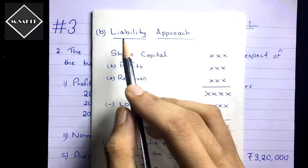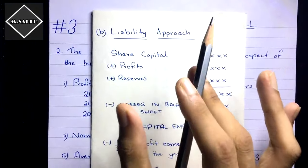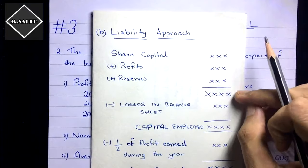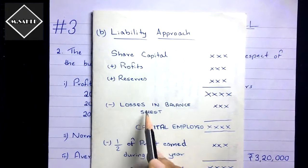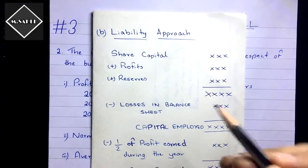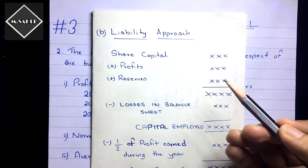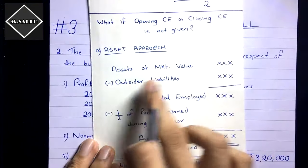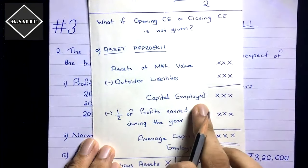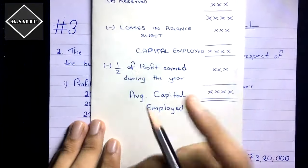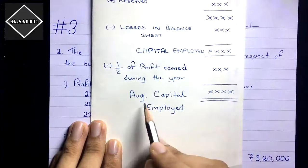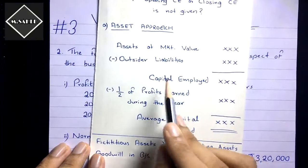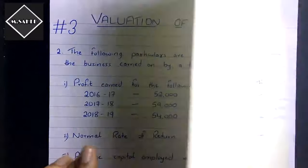In the liability approach: take share capital plus all profit reserves, add them together, then subtract all losses in the balance sheet such as preliminary expenses and goodwill in the balance sheet. This gives you capital employed — the same result as the asset approach. Then subtract half of the current year's profit to get average capital employed.